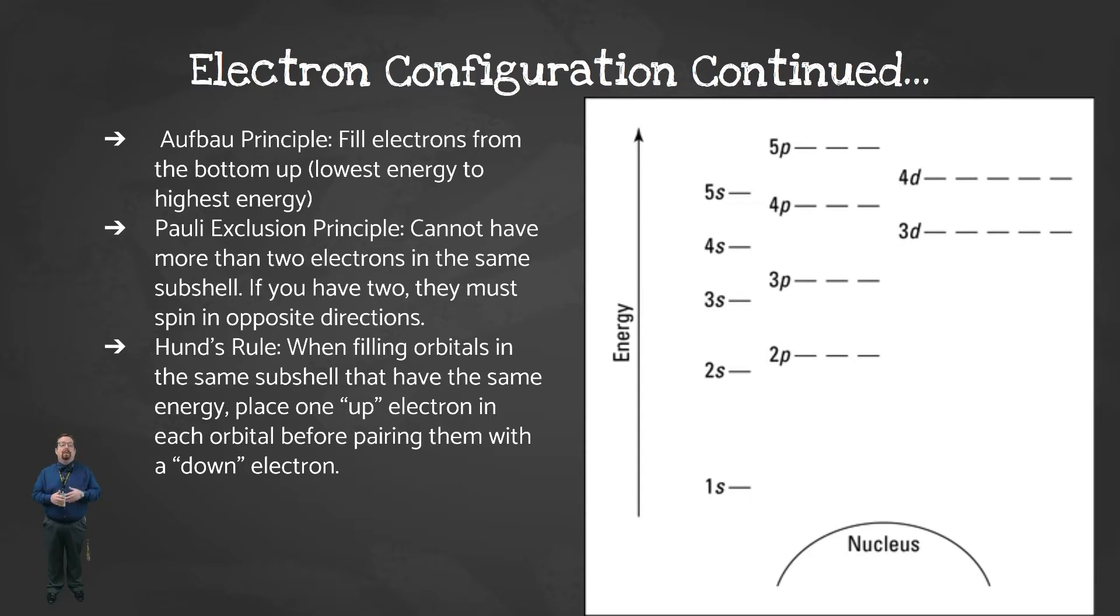The Pauli exclusion principle says that we can't have more than two electrons in the same orbital. And if we do have two electrons in the same orbital, they have to spin in opposite directions. We usually represent these electrons as up and down electrons. Finally, Hund's rule states that when you're filling orbitals in the same sublevel, such as the 2p sublevel, you have to place one up electron in each orbital before you can go back and start pairing them with down electrons. Since these three orbitals are at the same level of energy here, the electrons like to spread out as much as they can.